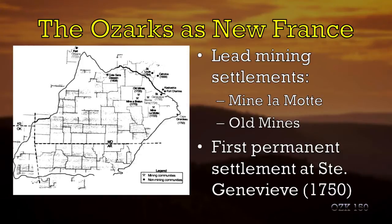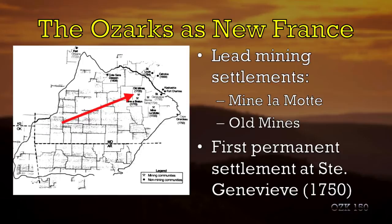Mine Lamont is in modern-day Madison County, Missouri — not too far north of Fredericktown. Old Mines is in Washington County, north of Potosi. Both were French lead mining settlements occupied off and on for many years, eventually becoming permanent French settlements later in the 1700s, but in the earliest days they were just mining outposts.